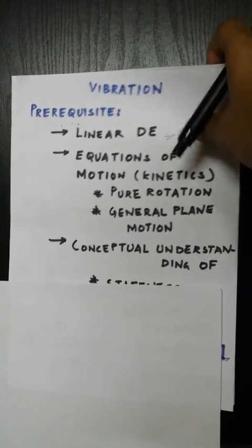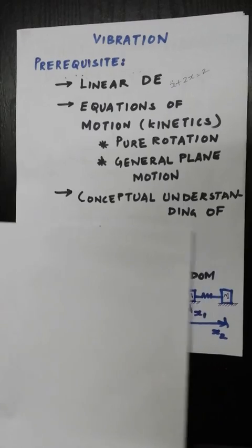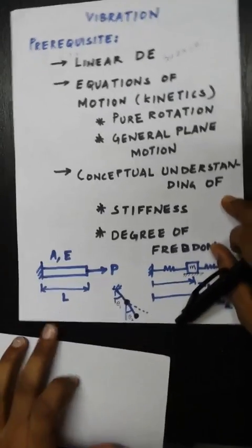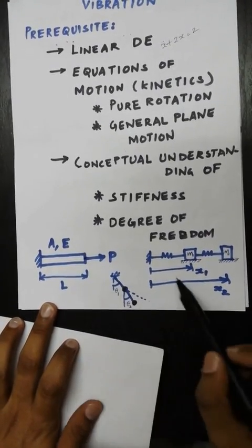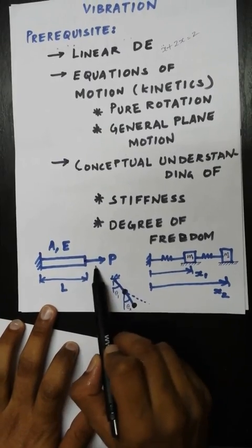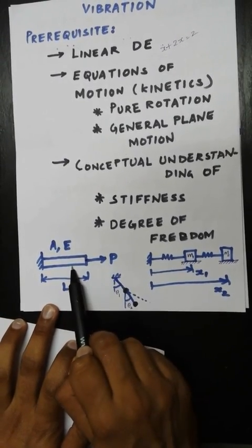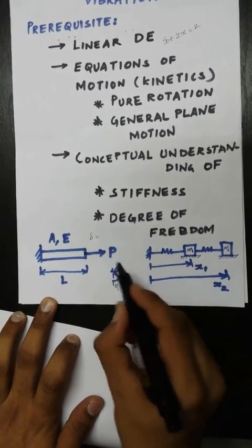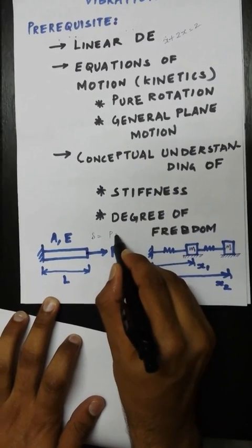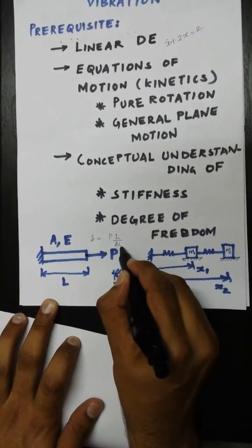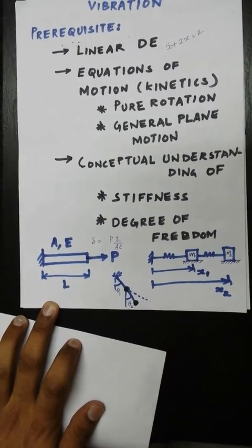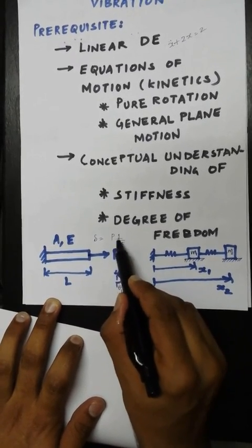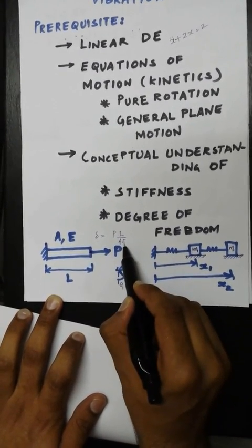Coming down, we should also have a clear-cut idea regarding what is stiffness. Coming back to this example, here is a small one-dimensional rod. I'm applying a force P on this particular rod, so this particular point will have a deflection delta, which will be P L divided by AE. P by A is the stress, delta by L is the strain, and E is the Young's modulus. I simply used Hooke's law to arrive at this particular equation.